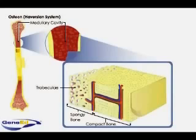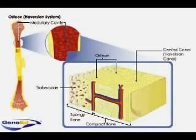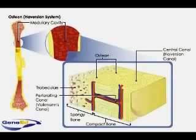Densely packed cylindrical structural units called osteons or Haversian systems constitute compact bone, and in a long bone lay parallel to the long axis. A central canal or Haversian canal lies in each osteon and contains perforating canals, or Volkmann's canals, that branch out at right angles. Haversian canals contain blood vessels and nerves, and small branches stem off into the perforating canals to connect to the periosteum's blood and nerve supply.